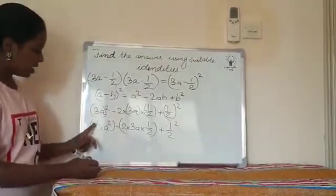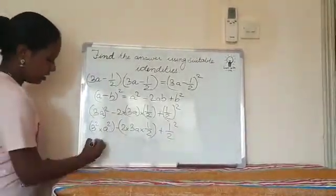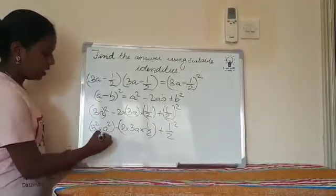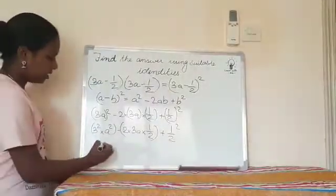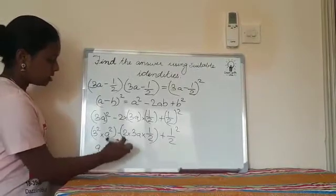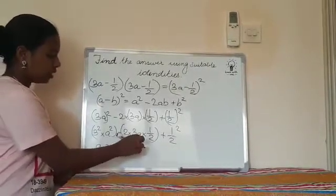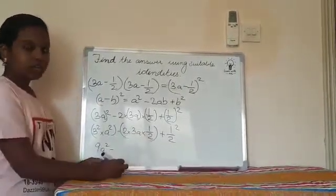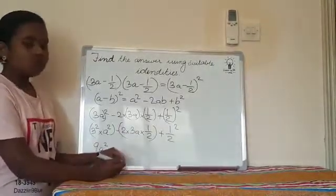9a² minus 2 into 3a into 1/2, which is 6a into 1/2.